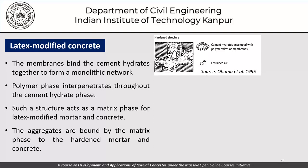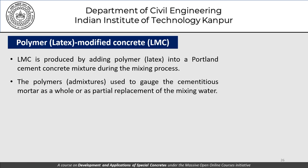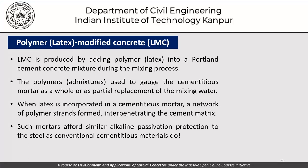The polymer phase interpenetrates throughout the cement hydrate phase, and such a structure acts as a matrix phase for the latex modified mortar or concrete. The aggregates are bound by this matrix phase. The polymers can be looked upon as admixtures used to modify the cementitious mortar, or as a partial replacement of mixing water. When latex is incorporated in a cementitious mortar, a network of polymer strands forms, interpenetrating the cement matrix, and such mortars afford similar alkaline passivation protection to steel as conventional cementitious materials.